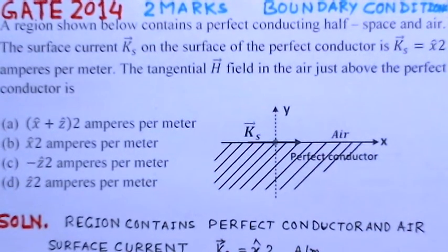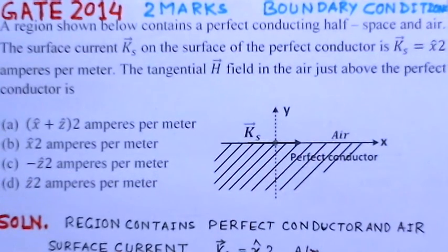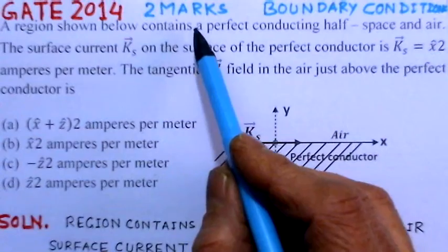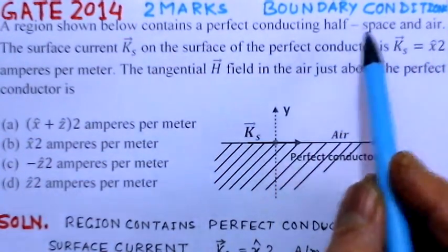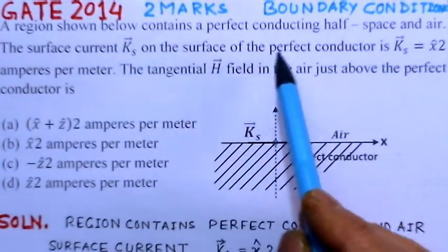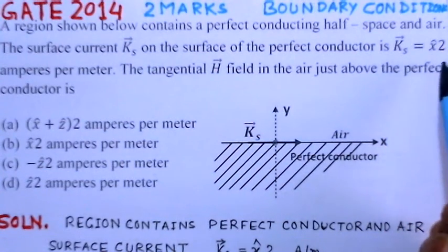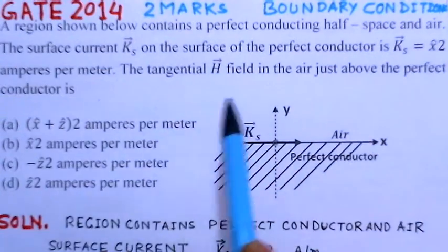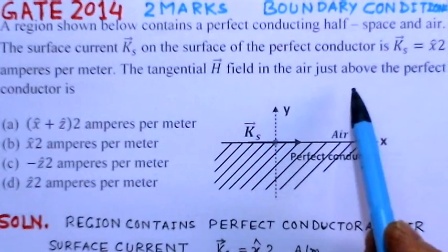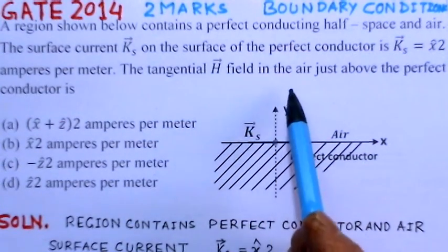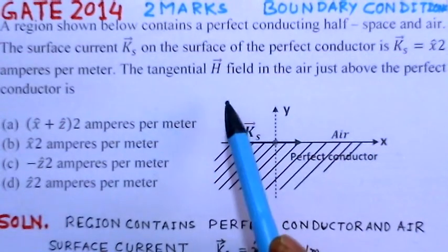The present problem is on the topic of wave propagation, specifically related to boundary conditions. This is a GATE 2014 problem worth two marks. A region contains a perfect conducting half space and air. The surface current Ks on the surface of the perfect conductor is Ks = x̂ × 2, that is 2x̂ amperes per meter. We have to find the tangential H field in the air just above the perfect conductor.